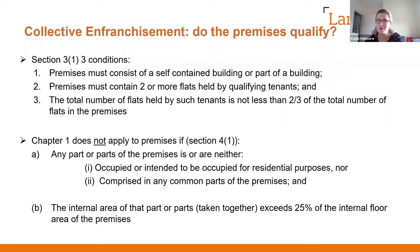In terms of whether the premises qualify, there are three conditions at section 3(1): they must consist of a self-contained building or part of a building; they must contain two or more flats held by qualifying tenants; and the total number of flats held by such tenants must be not less than two-thirds of the total number of flats. But — and this is the important bit for mixed-use premises — collective enfranchisement does not apply if the premises fall within the proviso in section 4. Section 4 says that where any part of the premises is neither occupied nor intended to be occupied for residential purposes, and the internal area of that part is 25% or more of the internal floor area of the premises, it won't qualify. Essentially, if you have more than 25% non-residential floor area, the premises won't qualify.